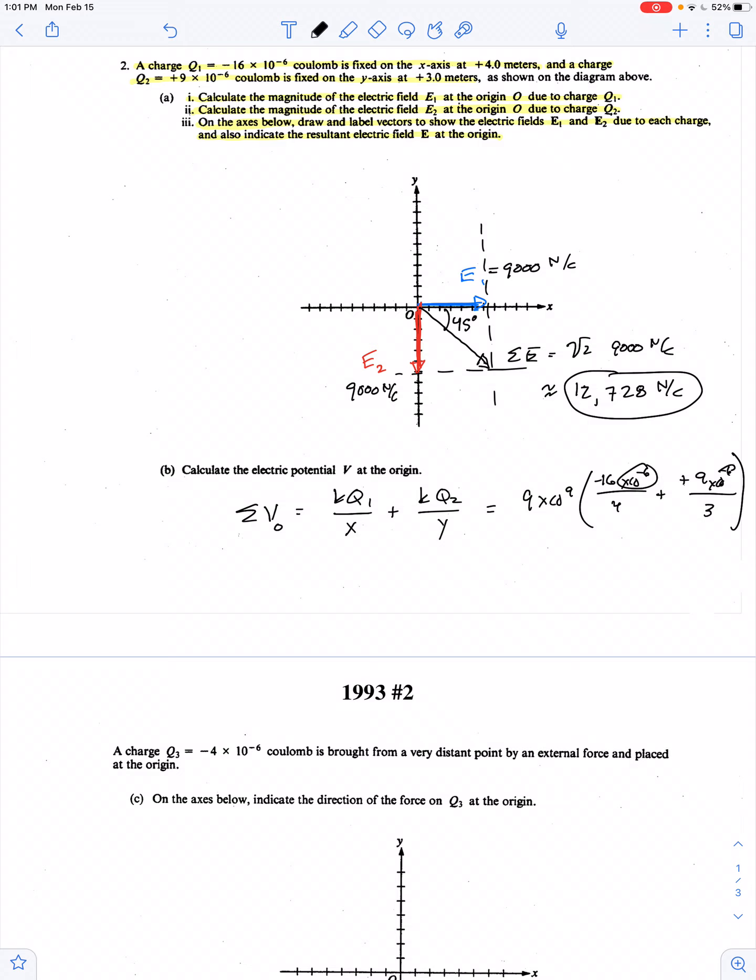Let's pull out this 10 to the negative 6, combine it with this 10 to the 9th so we just have 10 to the 3rd. So negative 16 over 4 is negative 4, 9 over 3 is 3, negative 4 plus 3 is negative 1. So we have the net electric potential is negative 9,000 joules per coulomb.